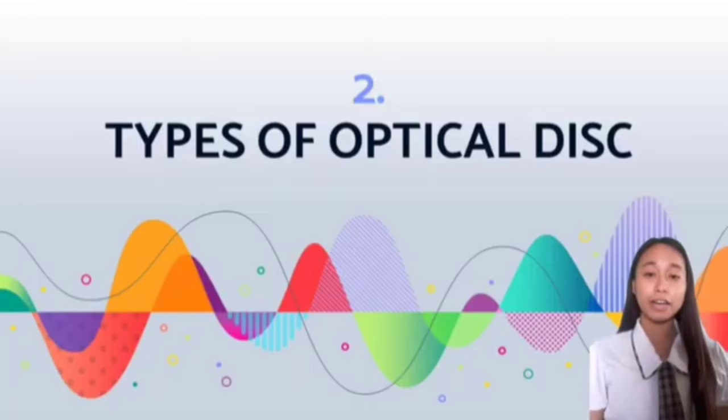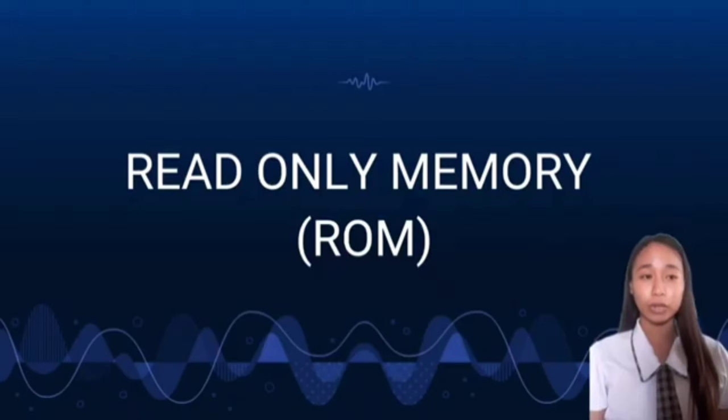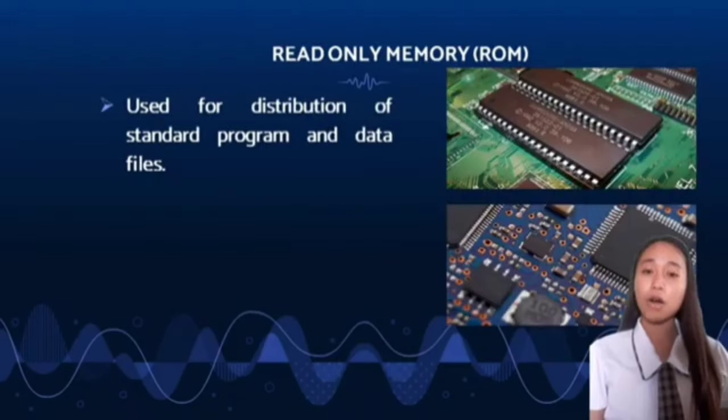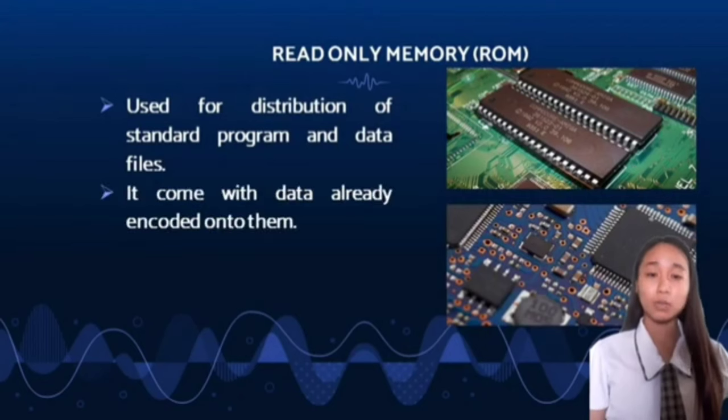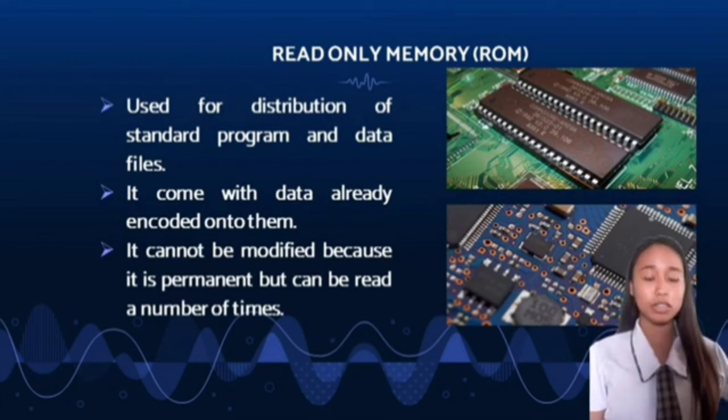Here are the types of optical disks. The first one is the read-only memory or ROM. ROM is used for distribution of standard program and data files. It comes with data already encoded onto them. It cannot be modified because it is permanent but can be read a number of times. This type of storage medium permanently stores data on personal computers, PCs, and other electronic devices. Because ROM is read-only, it cannot be changed and it is permanent.